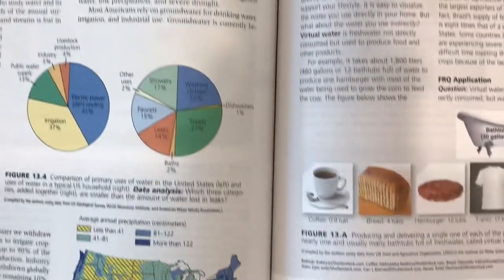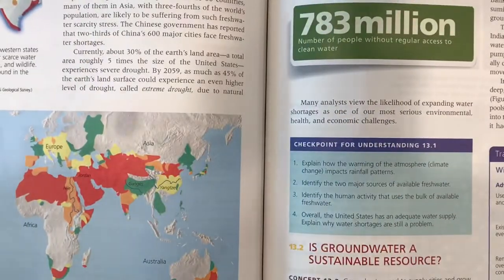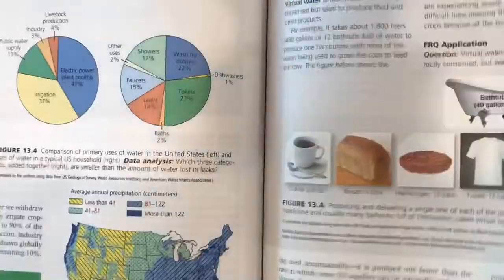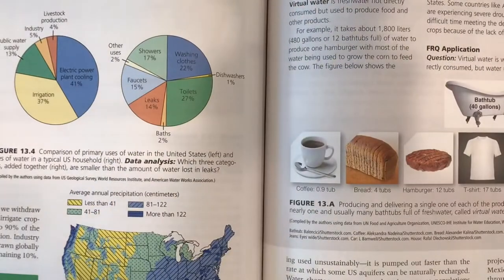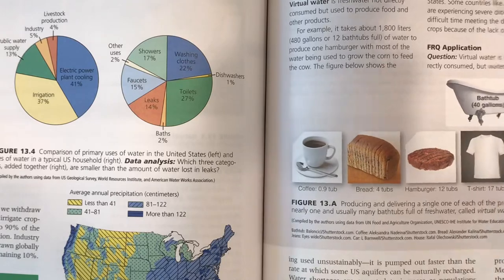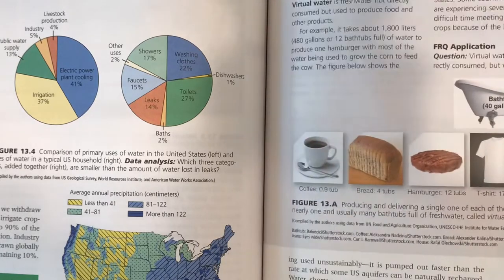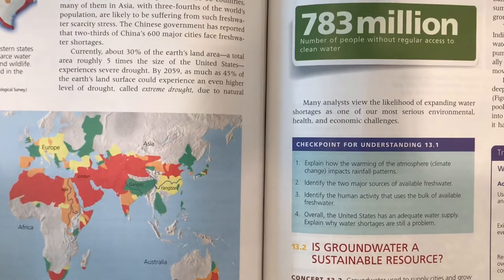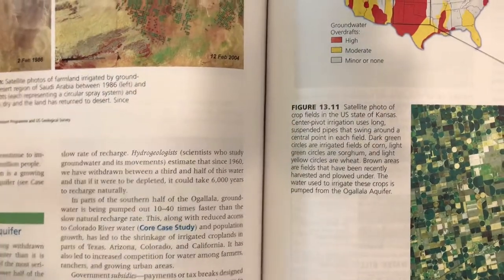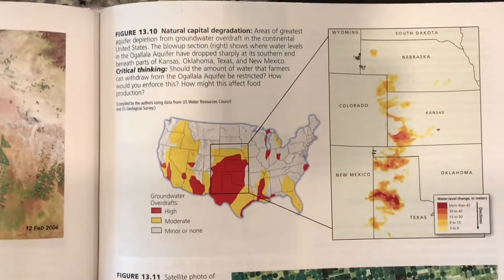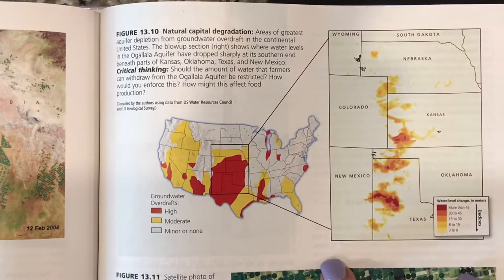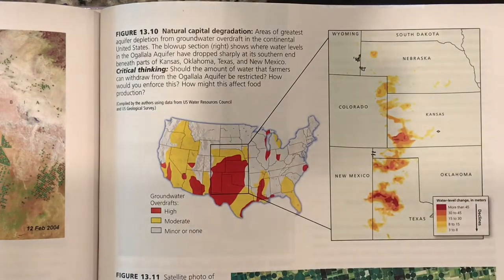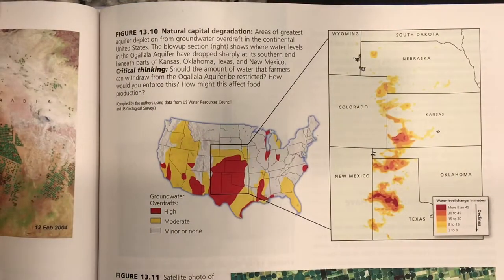The largest aquifer in the United States is the Ogallala Aquifer, located in the Midwest. It supplies about one-third of all groundwater used in the United States and is being used faster than it is being recharged — water that in some cases has been sitting there for millions of years.